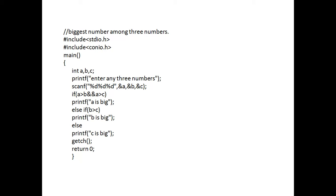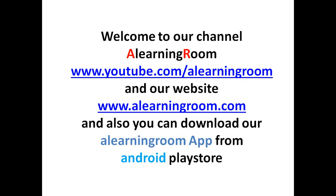So if a is greater than b and a is greater than c, then only we can say a is bigger. Else if b is greater than c, print 'b is bigger'; else print 'c is big.' That is about nested if statements — with the help of this program you can find the biggest number among three numbers. If you like this video, share and subscribe to our channel 'A Learning Room'. Our website is www.alearn...